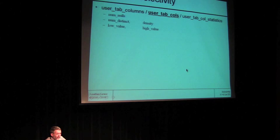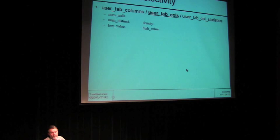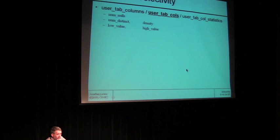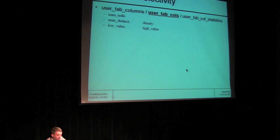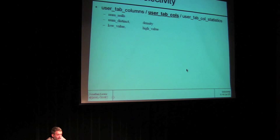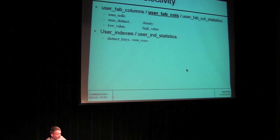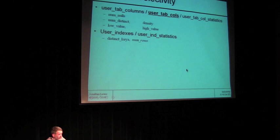In calculating selectivity, there are only a few numbers Oracle starts off with. Basically, we have predicates which are about columns, so we look at user_tab_columns — or all_tab_columns and equivalents. Numbers relevant to Oracle when accessing data from the table: num_nulls (how many times the column is null), num_distinct (the number of distinct values), and the density — which is related to num_distinct. Then we have the low value and high value — the complete range of values the column may vary over. Those come into play with range-based predicates. We also pick up selectivity information from indexes — the distinct keys and num_rows in the index.